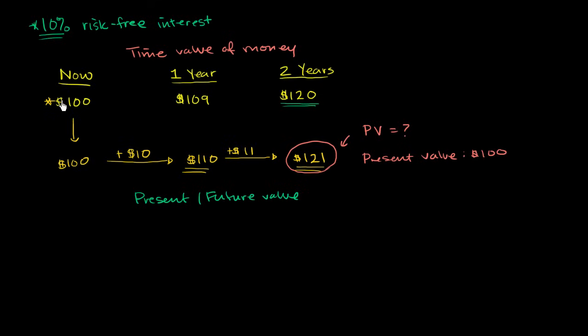Or another way to think about present and future value, if someone were to ask, what is the future value of this $100 in one year? Well, if you get 10% at the bank that's guaranteed, its future value is $110. After two years, its two-year future value is $121.